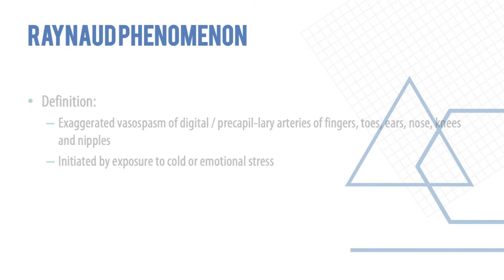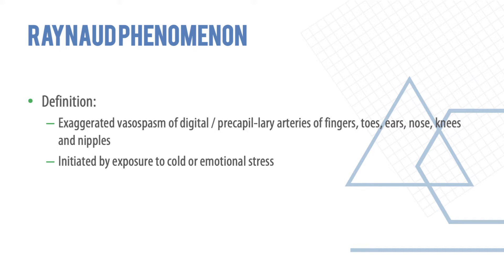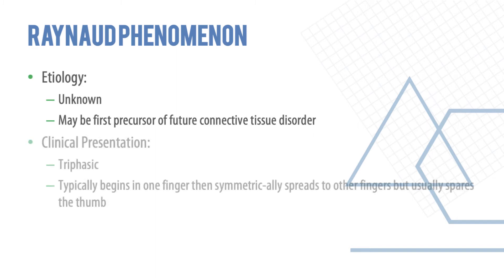Raynaud's phenomenon is defined as an exaggerated vasospasm of the digital or pre-capillary arteries — the fingers, toes, ears, nose, knees, and nipples. The small vessels in these areas get constricted, stopping blood supply, and they appear blue. This happens most commonly because of cold and emotional stress, though we don't fully understand why.